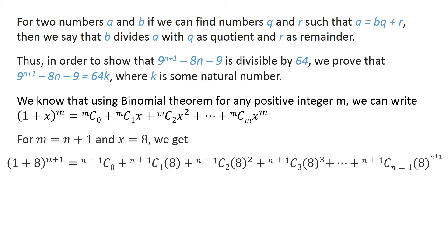For m equals n plus 1 and x equals 8, we get: (1 + 8) raised to the power n plus 1 equals n+1 choose 0, plus n+1 choose 1 times 8, plus n+1 choose 2 times 8 raised to the power 2, plus n+1 choose 3 times 8 raised to the power 3, and so on, plus n+1 choose n+1 times 8 raised to the power n plus 1.